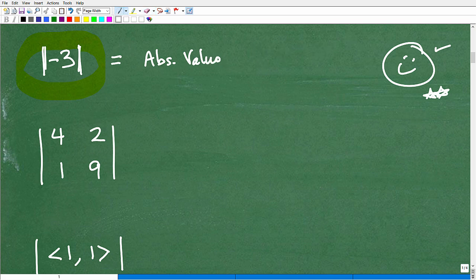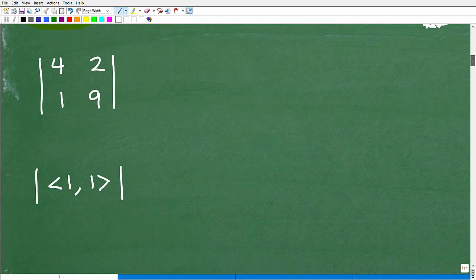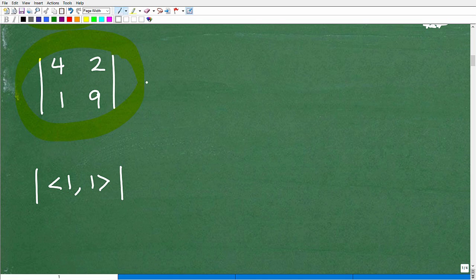All right, so we got this down here, the same, this symbol, when we use it around a number, we're talking about absolute value. All right, now, what about this guy right here? What does this mean? Well, this is a whole different deal. Okay? This happens to be what we call the determinant, okay? A determinant of a 2 by 2 matrix.